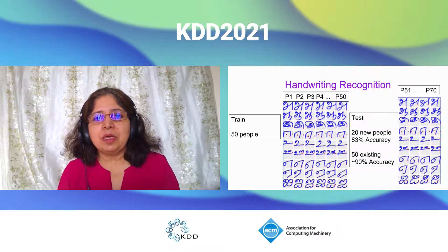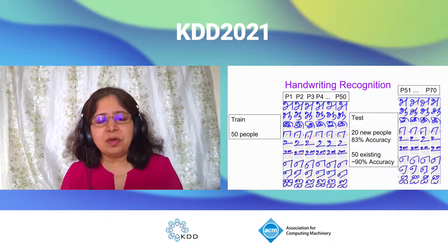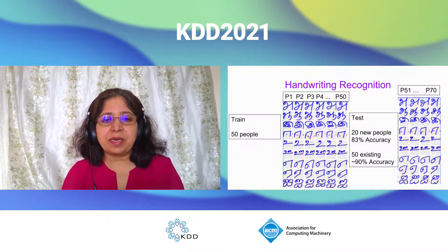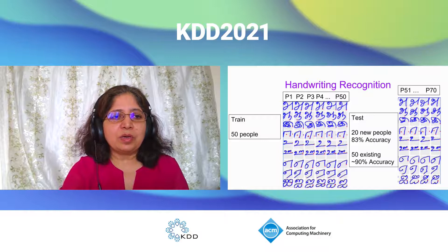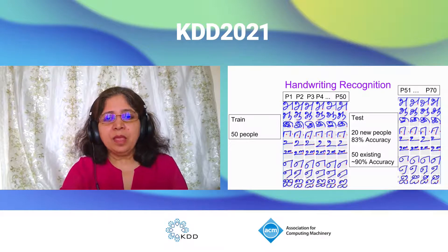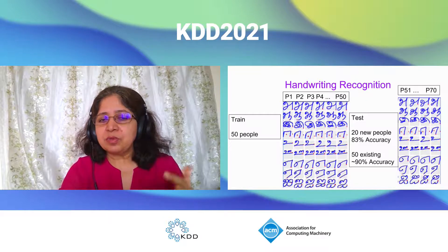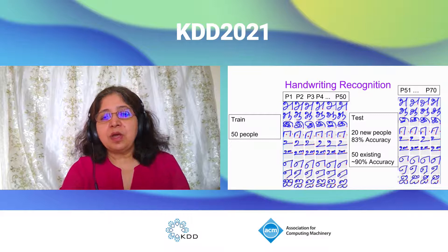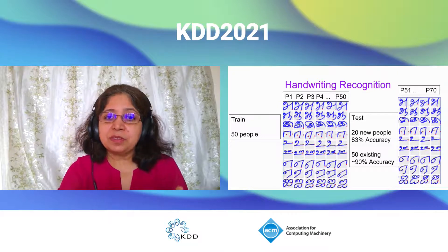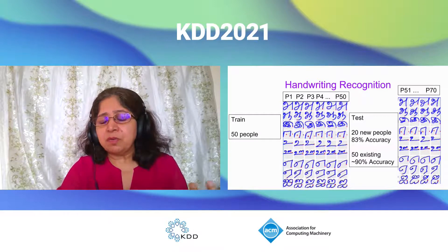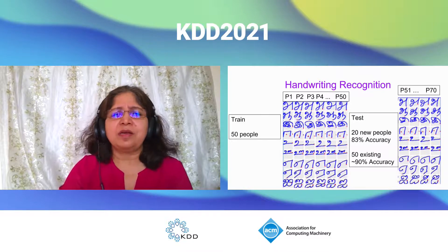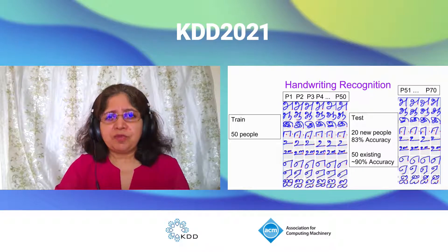The second example was a handwriting recognition task — a much smaller-scale model. We trained a model to recognize individual characters from several Indian languages. For Tamil, handwriting was collected from 50 different people. When tested on more samples from the same 50 people, we got around 90% accuracy. But when tested on 20 new people, we got a 7% drop in accuracy. This again demonstrates the lack of robustness to natural change — surely you are not training a handwriting recognition model to deploy it only on the same people it was trained on.